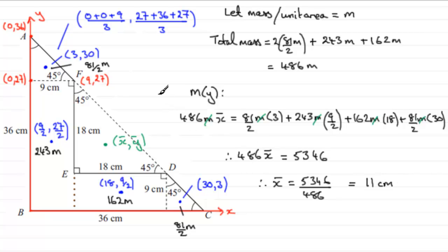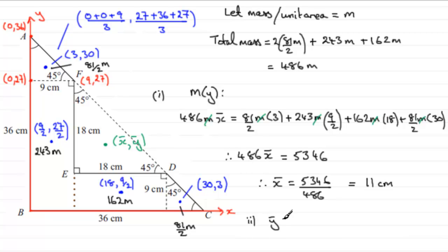That was part 1 — the distance from AB is 11 cm. For part 2, the distance from edge BC, because the shape is symmetrical, y-bar equals x-bar by symmetry. So y-bar = 11 centimetres as well.